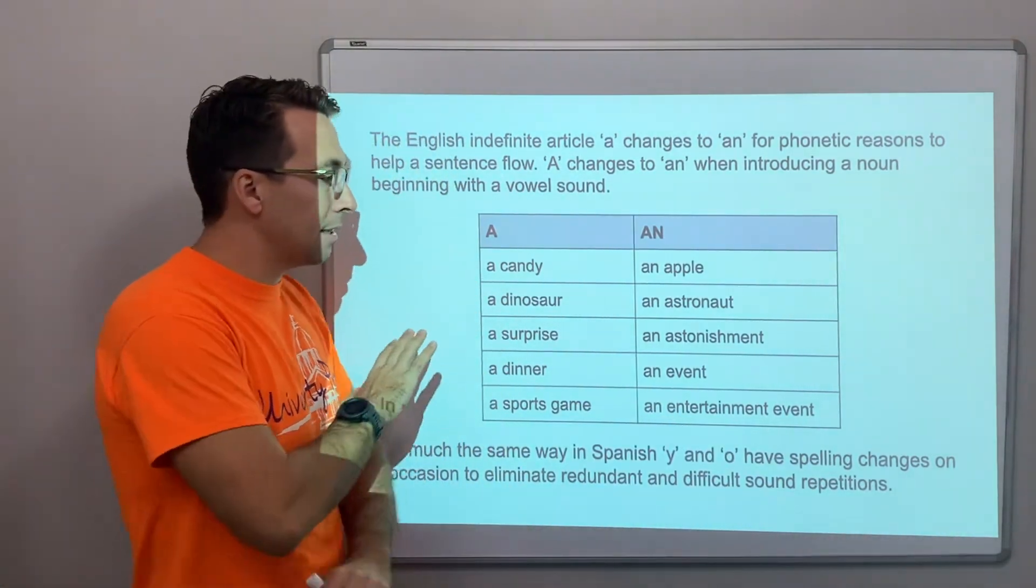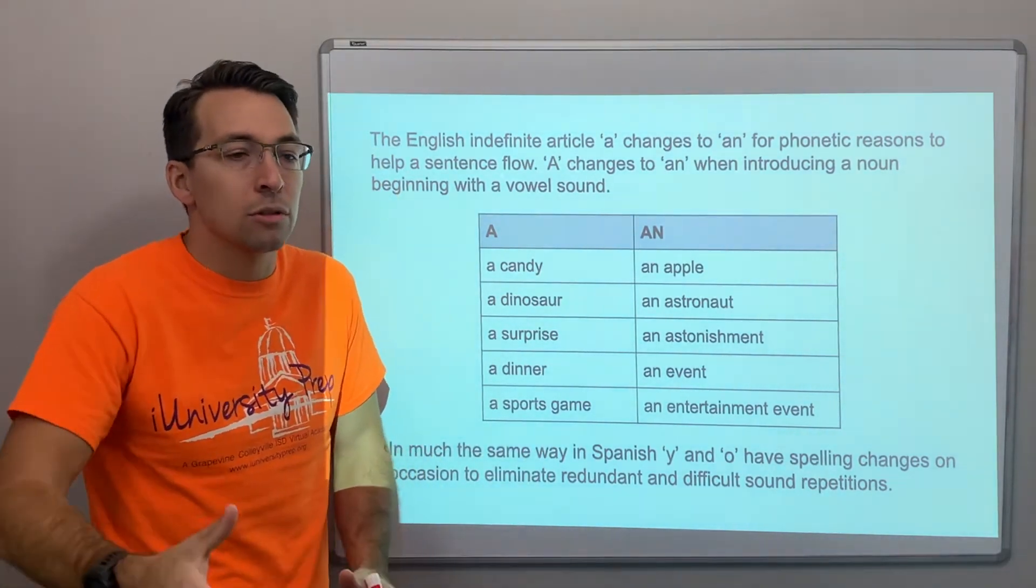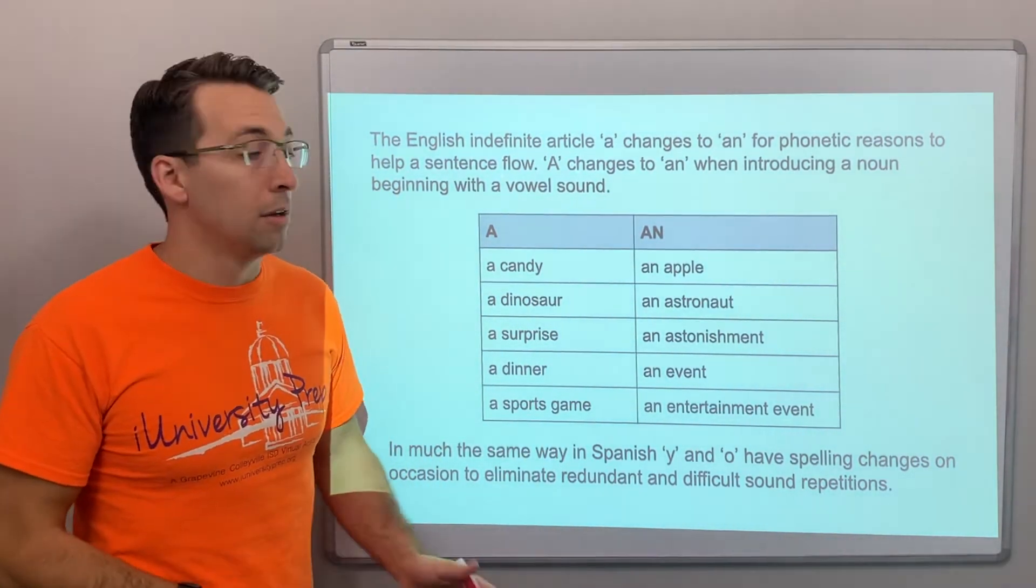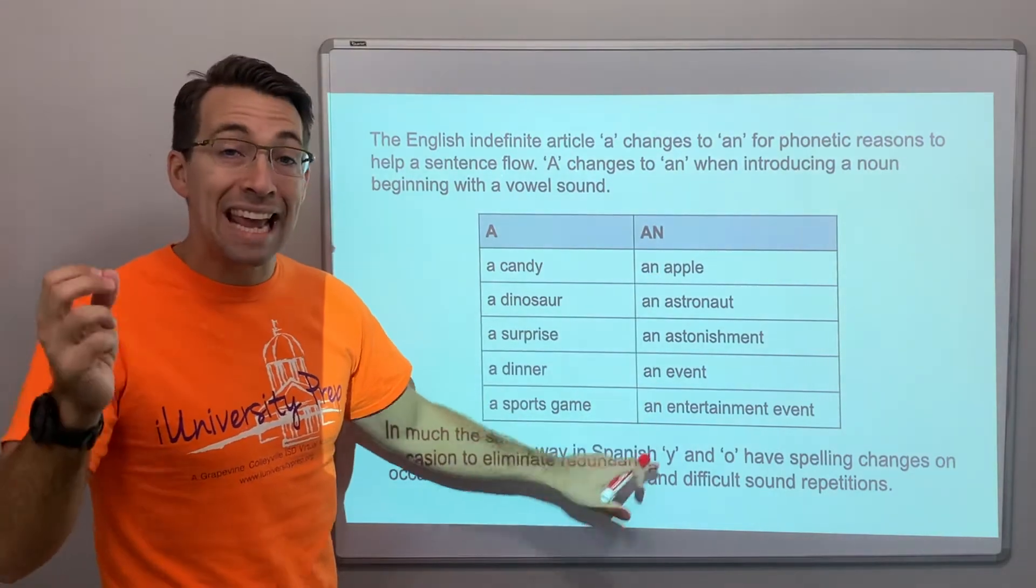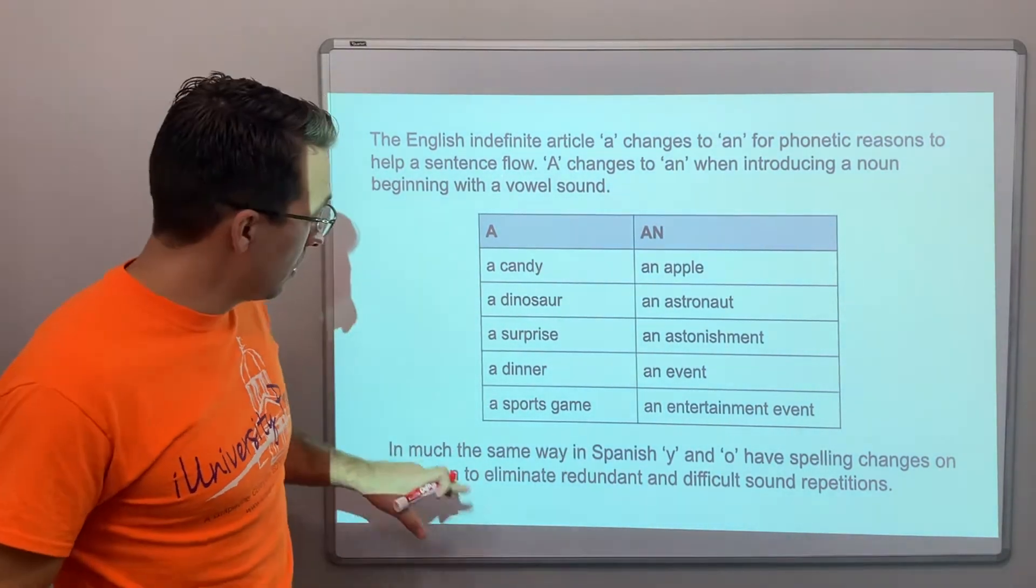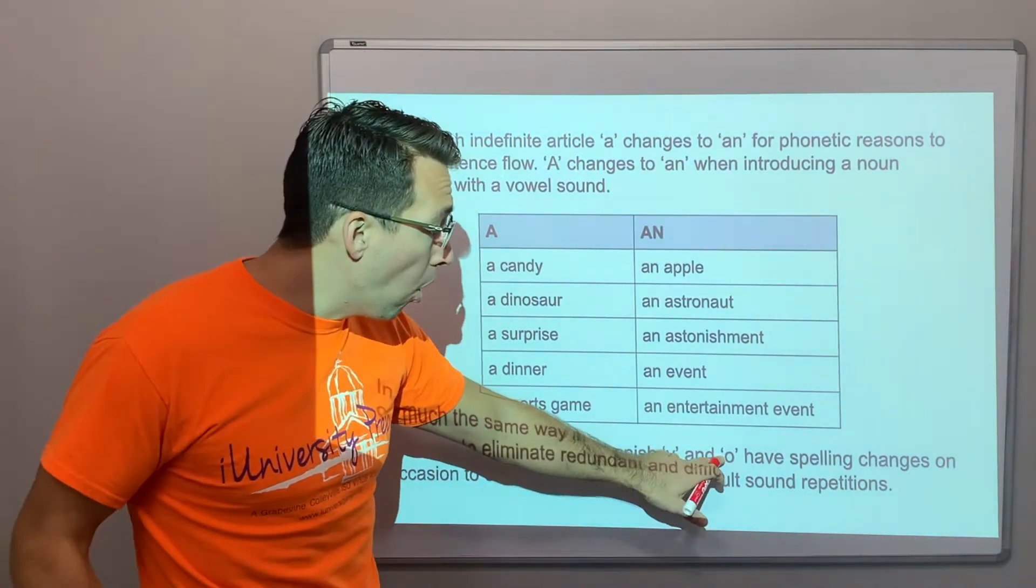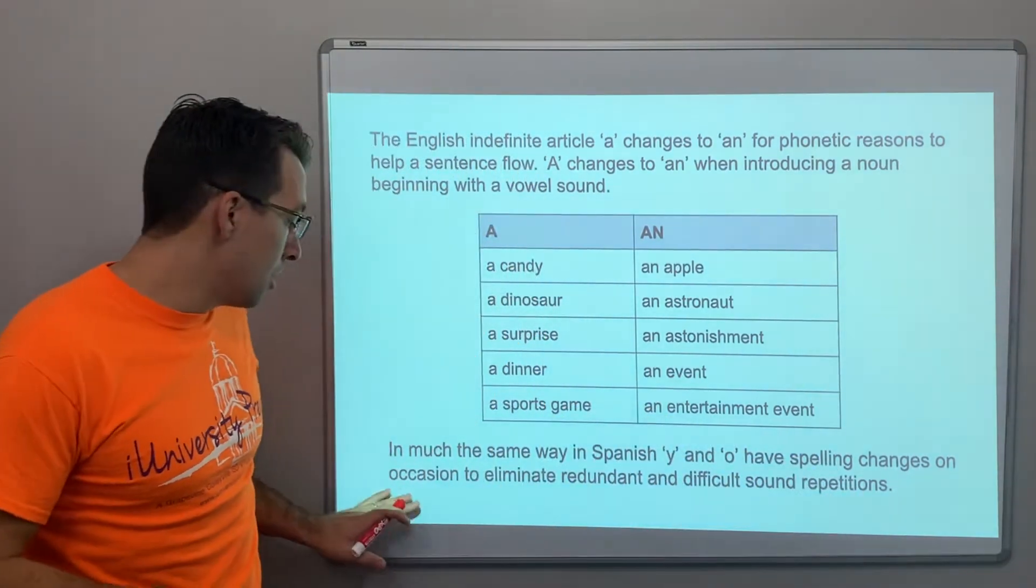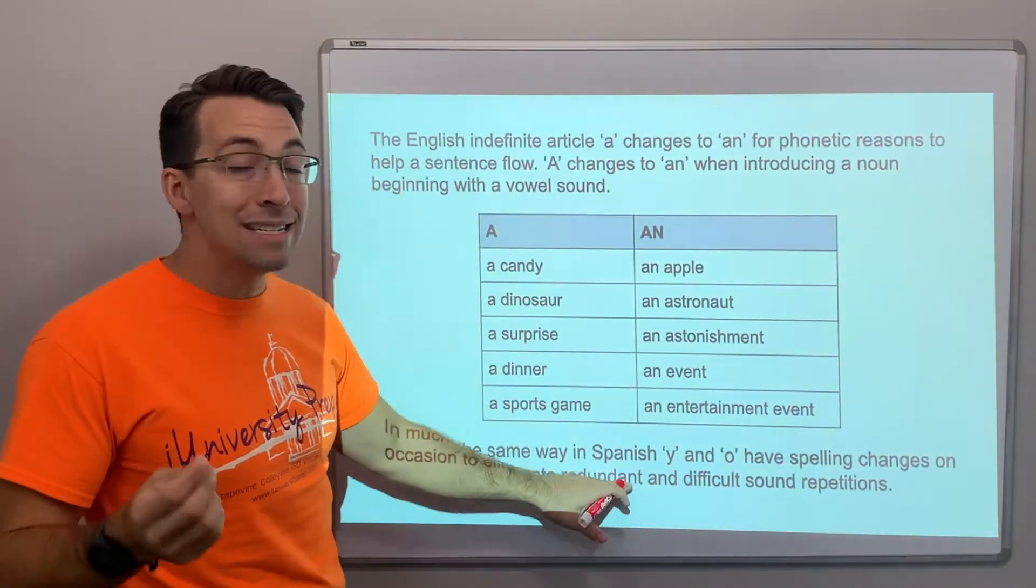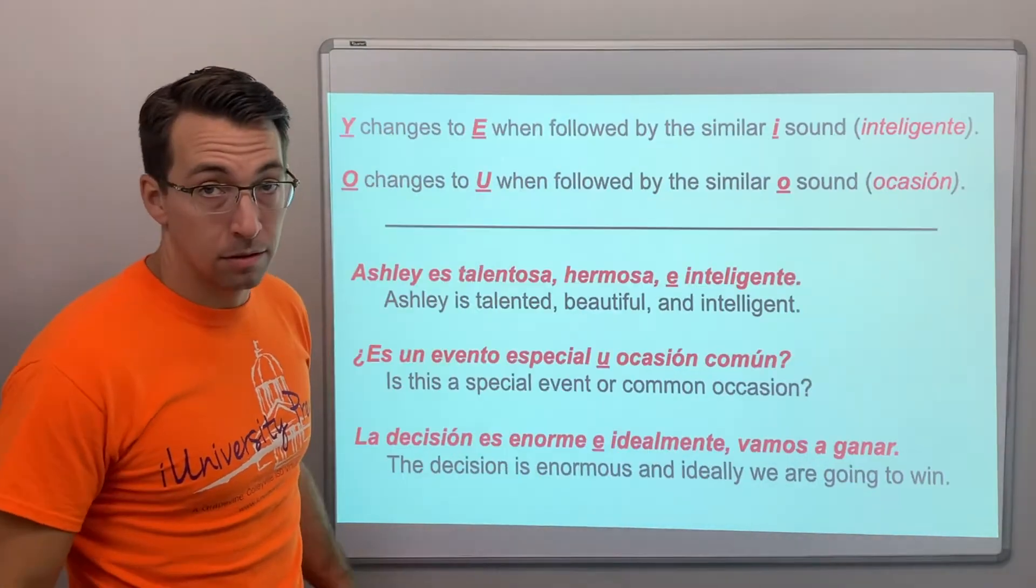So, it's, it's just, it's the same. A and an are the same. It's an indefinite article introducing a noun. However, for phonetic reasons, we add this n when the noun starts with the vowel. In much the same way in Spanish, e and o change, have spelling changes on occasion to eliminate redundant and difficult sound repetitions.